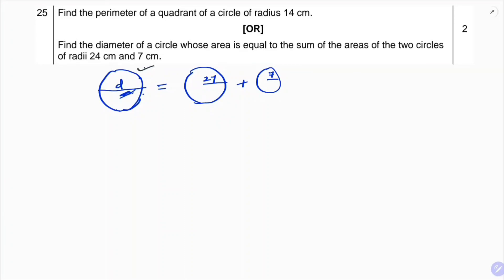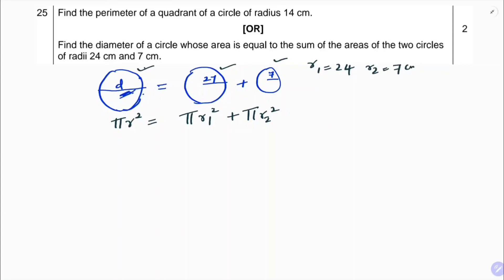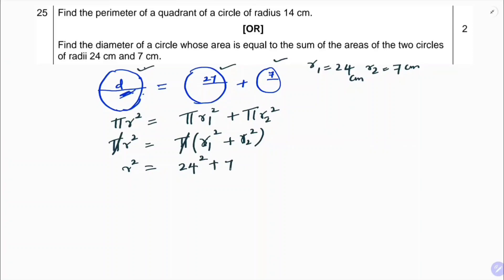The area of the unknown circle equals the sum of the areas of the two given circles: πr² = πr1² + πr2², where r1 = 24 and r2 = 7 centimeters. Taking π common on both sides, π cancels out, leaving r² = r1² + r2², so r² = 24² + 7².